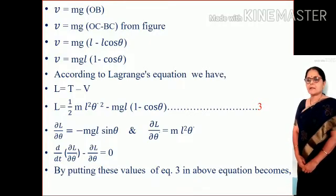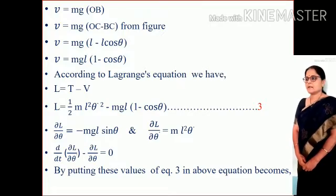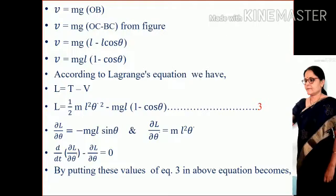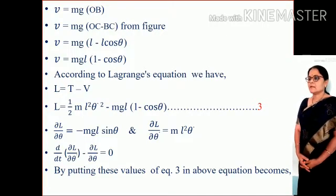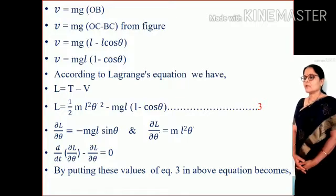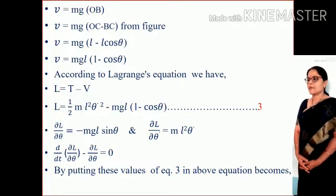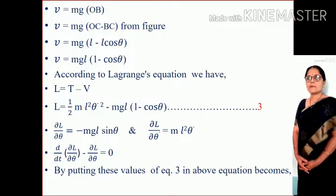According to Lagrangian equation, the Lagrangian of any system equals kinetic energy minus potential energy. Hence, L equals one half m L squared theta dot squared minus mgL(1 minus cos theta).